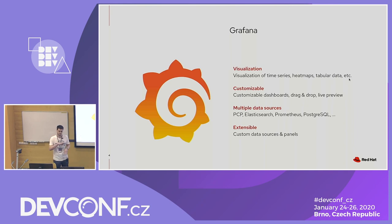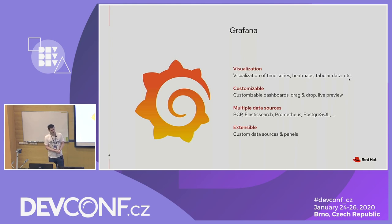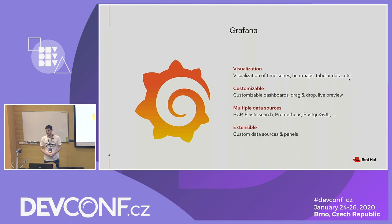You can select a legend, which lines you want, which color. You can hide something if you don't want some metric to be shown. It also supports multiple data sources — for example, PCP, but also Elasticsearch, Prometheus, InfluxDB SQL, and around 10 more. It's very extensible, so you can create your own plugins, your own data sources, and also panels. Panels are the visualization part, and in one dashboard you can have multiple data sources.